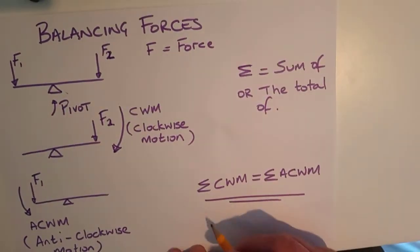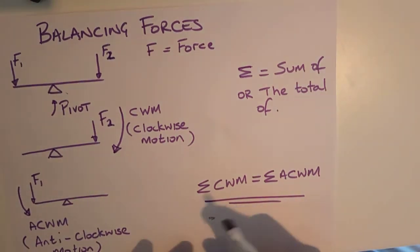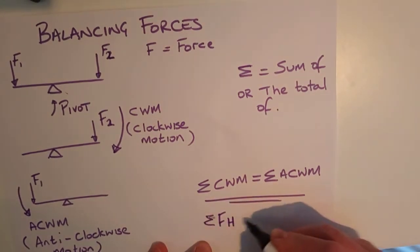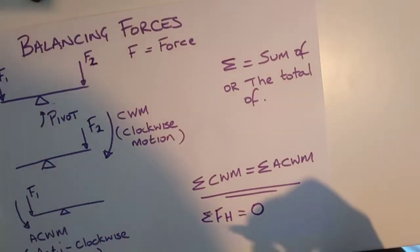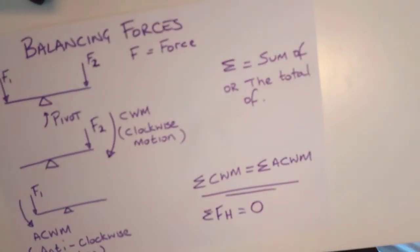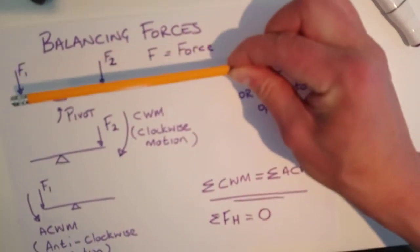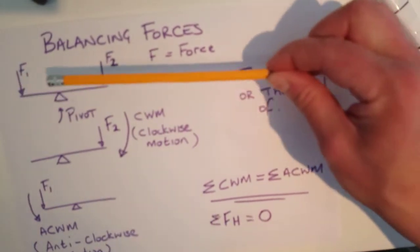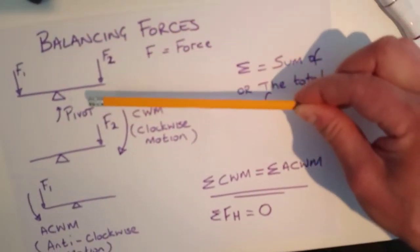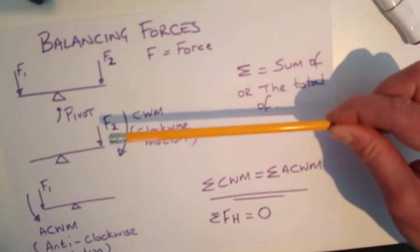And we can also say that the sum of the forces horizontally are equal to zero. So the forces acting on this horizontal beam or seesaw are equal to zero, which means it's not moving one way or the other, it's balanced. It's important in engineering that these things are balanced because if it's moving one way or the other, if there's more force exerted down than there's a resulting force, then we've got trouble, we're going to have something that's going to collapse. So it's important that they're actually balanced.